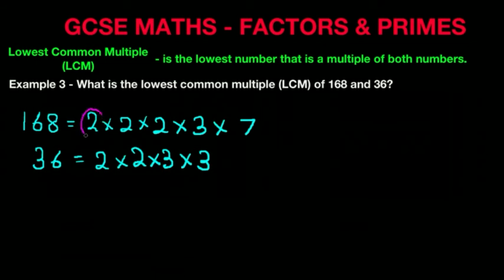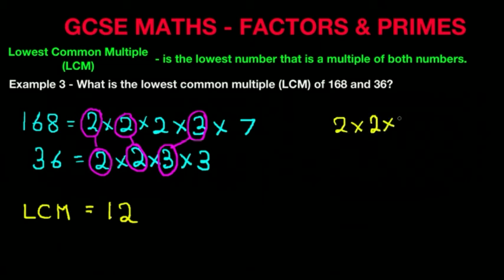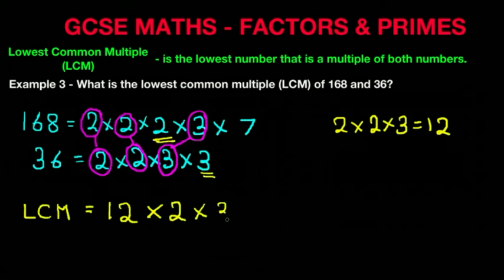What we also had was these numbers circled — we had the 2 and the 2 from 168 matched with 2 and 2 from 36, and then the 3 matched with the 3. To work out the lowest common multiple, we take the HCF which is 12 — those numbers we multiplied: 2 times 2 times 3 — times all the numbers that are left over: the 2, the 3, and the 7.